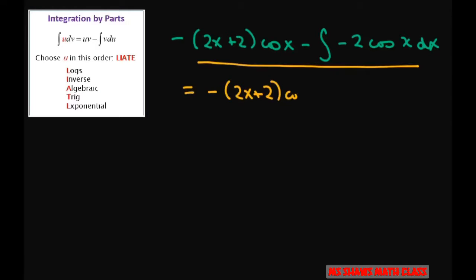So you get plus, and the antiderivative of cosine x is sine x. Put the 2 in front: 2 sine x. That's the last part we did. We had to do integration by parts twice.